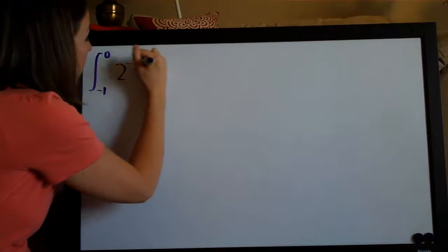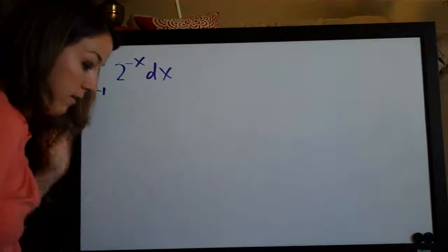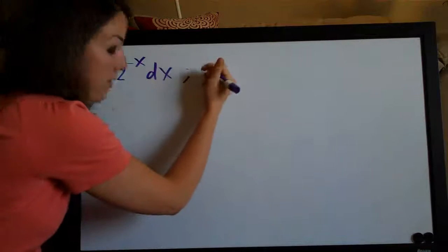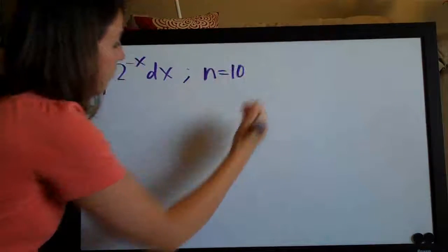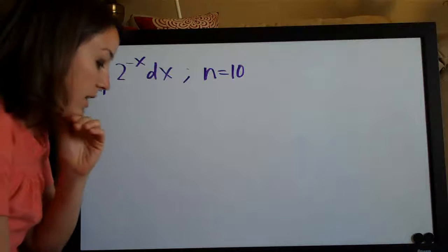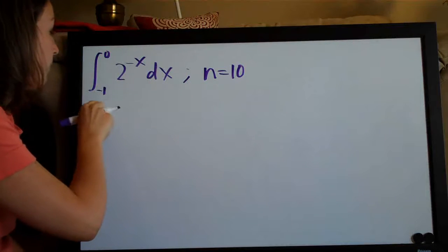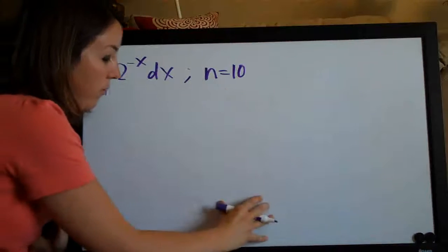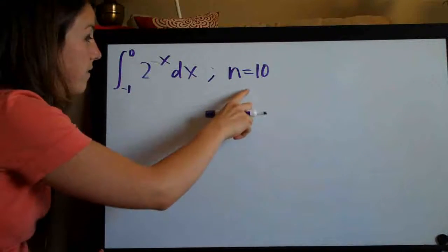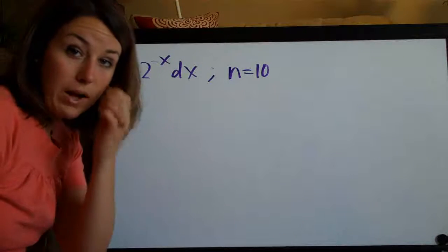We're going to be doing another trapezoidal rule problem today. This one asks us to use the trapezoidal rule to approximate the integral of 2 to the negative x dx on the range negative 1 to 0, and they've told us that n equals 10. So we're going to be using the trapezoidal rule to approximate the area between this curve and the x-axis on the range negative 1 to 0, dividing the range into 10 sections and using 10 trapezoids to approximate the area.